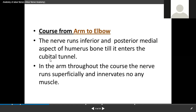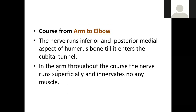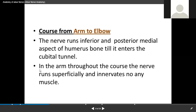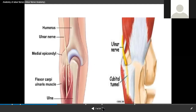In the arm throughout its course, the nerve runs superficially and innervates no muscle at all. In the forearm, we have muscles like biceps, brachialis, and coracobrachialis — but the ulnar nerve is not giving any nerve supply there; it just passes through.